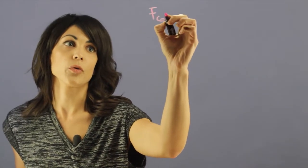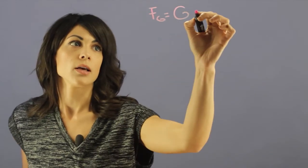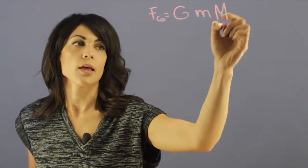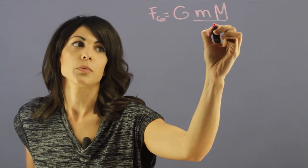Here we start with gravitational force. We have G, our gravitational constant. Let's call this the mass of the moon and capital M for the mass of the planet, and this is the distance between them.